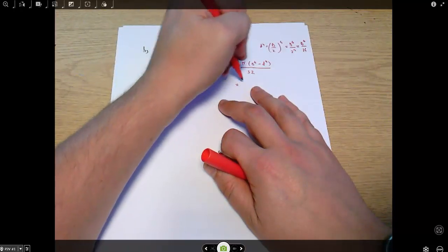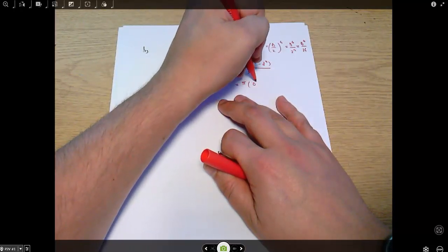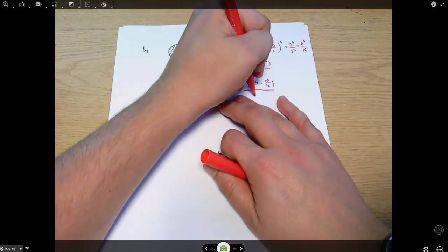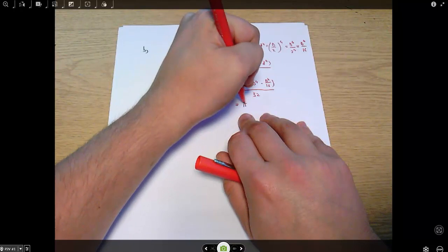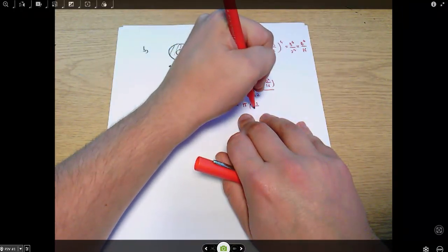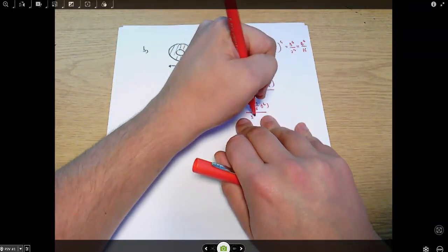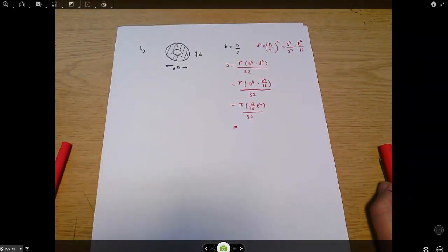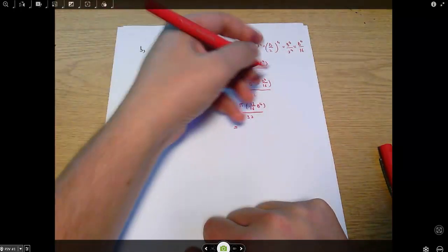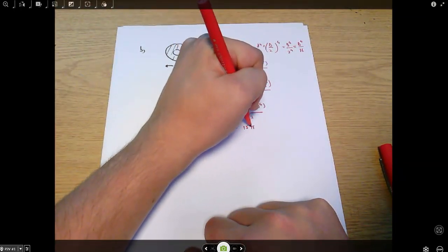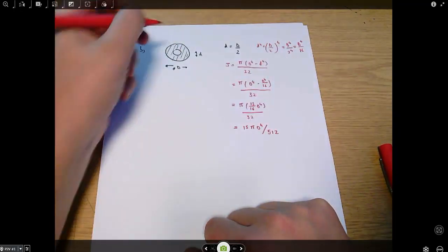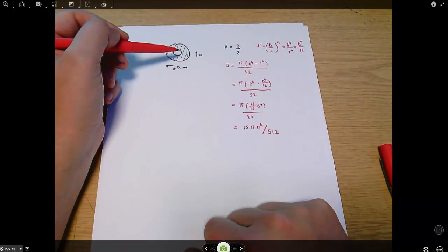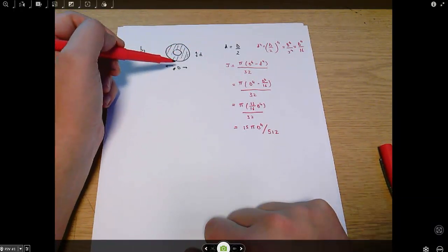So this is pi d to the 4 minus d to the 4 over 16, all over 32, which equals pi times 15 over 16 capital D to the 4 all over 32, which ends up equaling 15 pi d to the 4 over 512. That is the polar moment of inertia for this hollow shaft in terms of capital D, the outside radius.